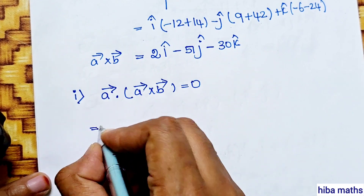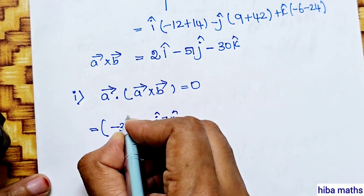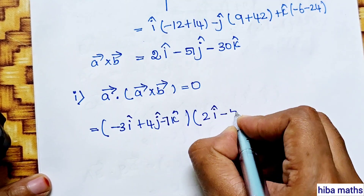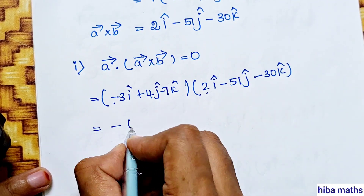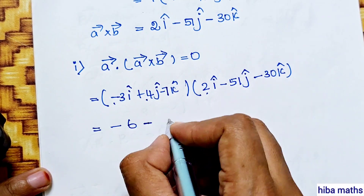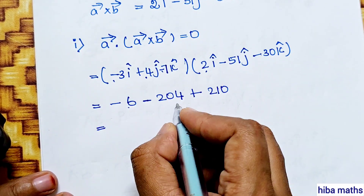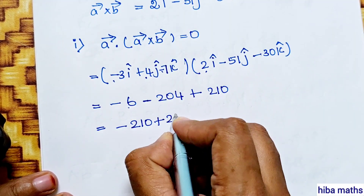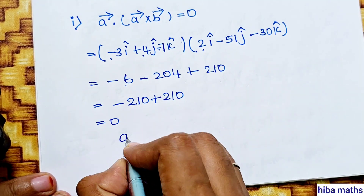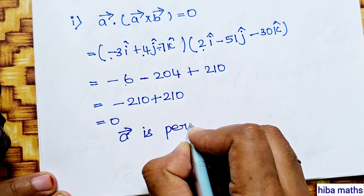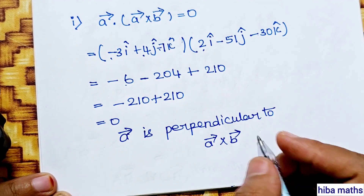A vector is minus 3i plus 4j minus 7k, into 2i minus 51j minus 30k. Minus 3 into 2 is minus 6; 4 into 51 is 204; minus into minus plus, 7 times 3 is 21. So minus 6 minus 204 then minus 210 plus 210, which is equal to 0. A vector dot A vector cross B vector equals 0, so A vector is perpendicular to A vector cross B vector.